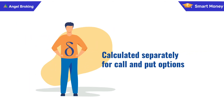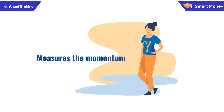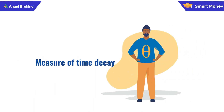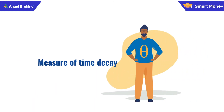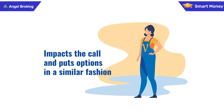Delta is the measure of option price sensitivity to changes in stock price. Gamma is the measure of option price sensitivity to changes in Delta. Theta measures the time decay of an option as we move towards expiry. Vega measures the sensitivity of the option price to changes in volatility.